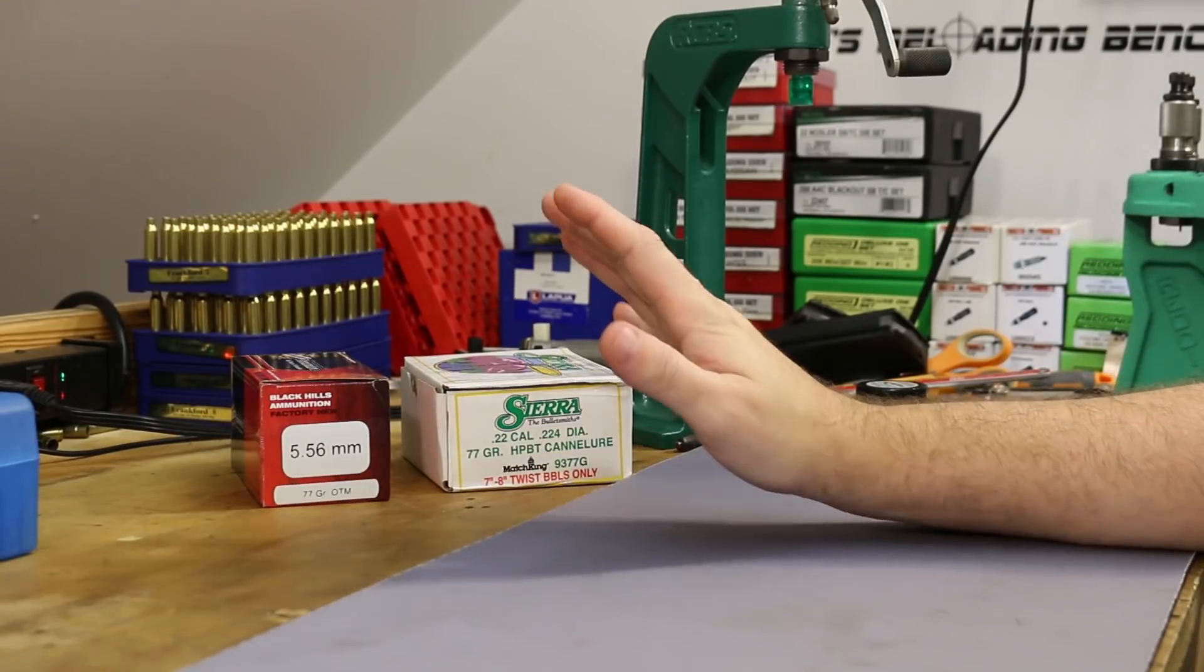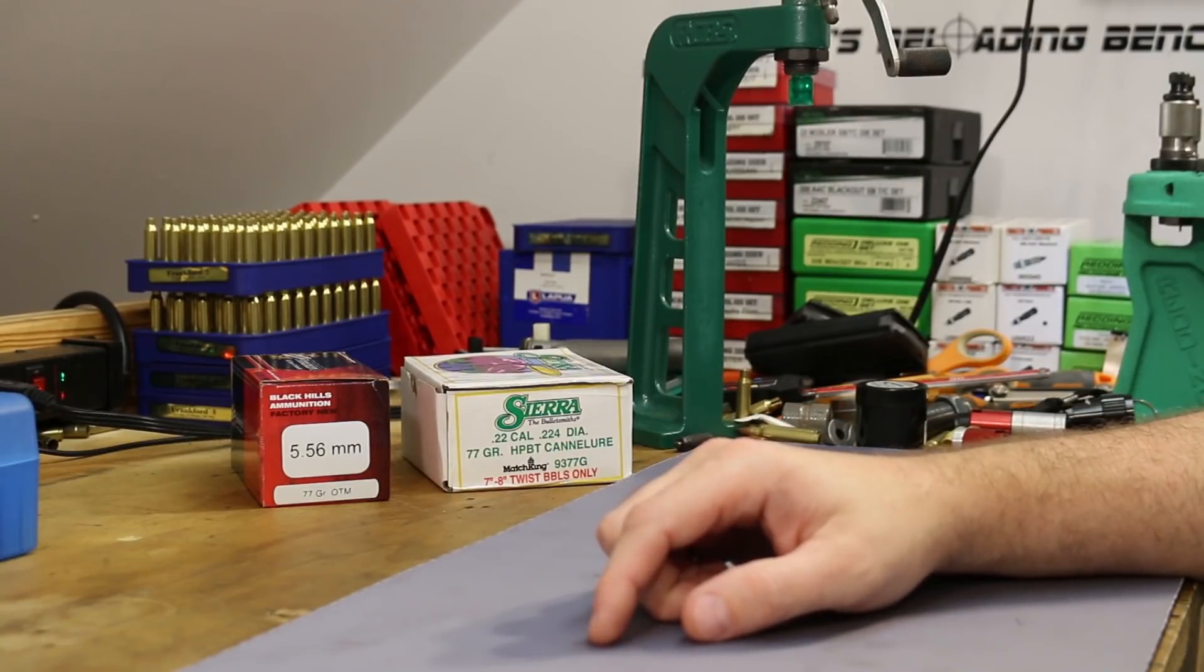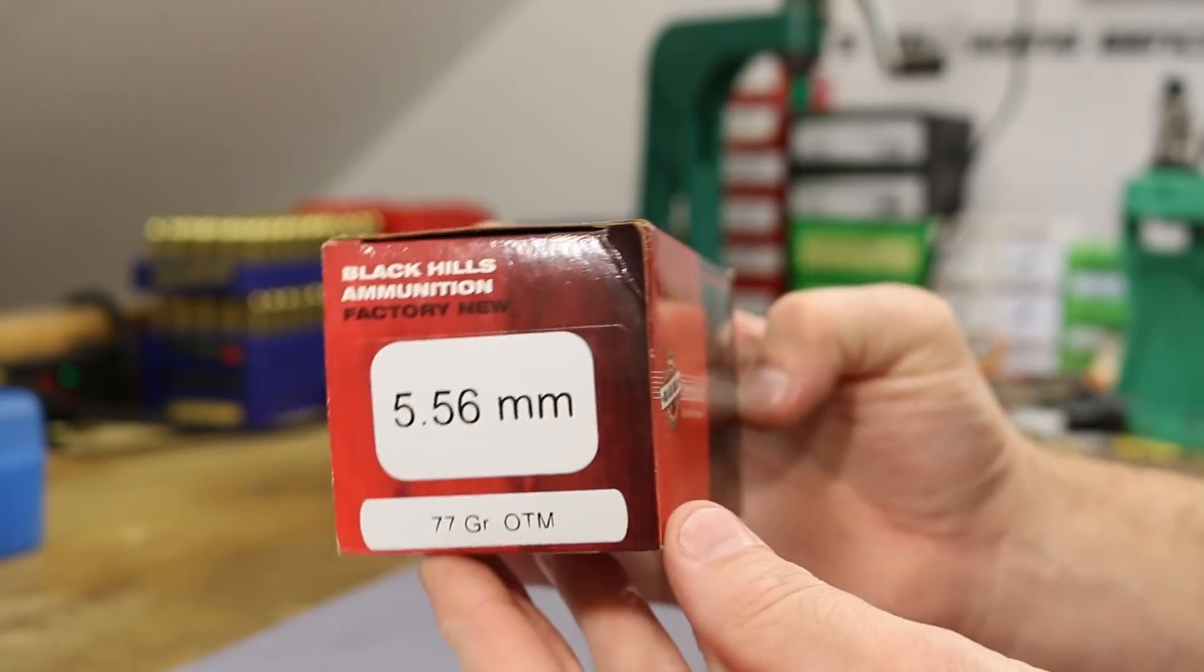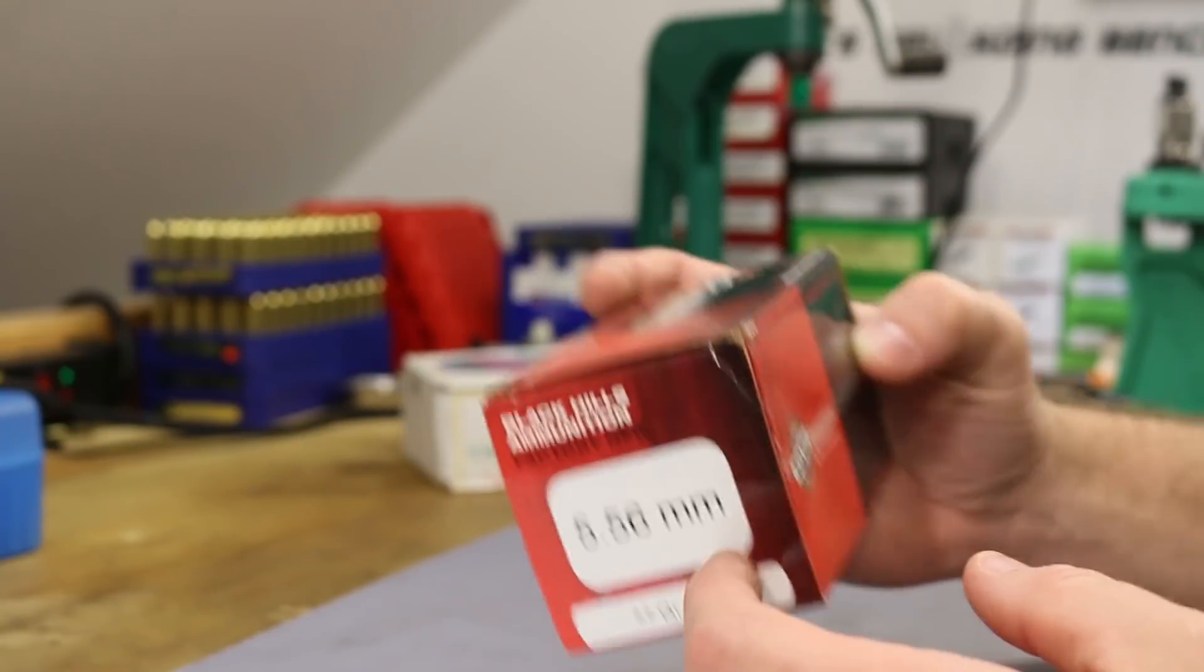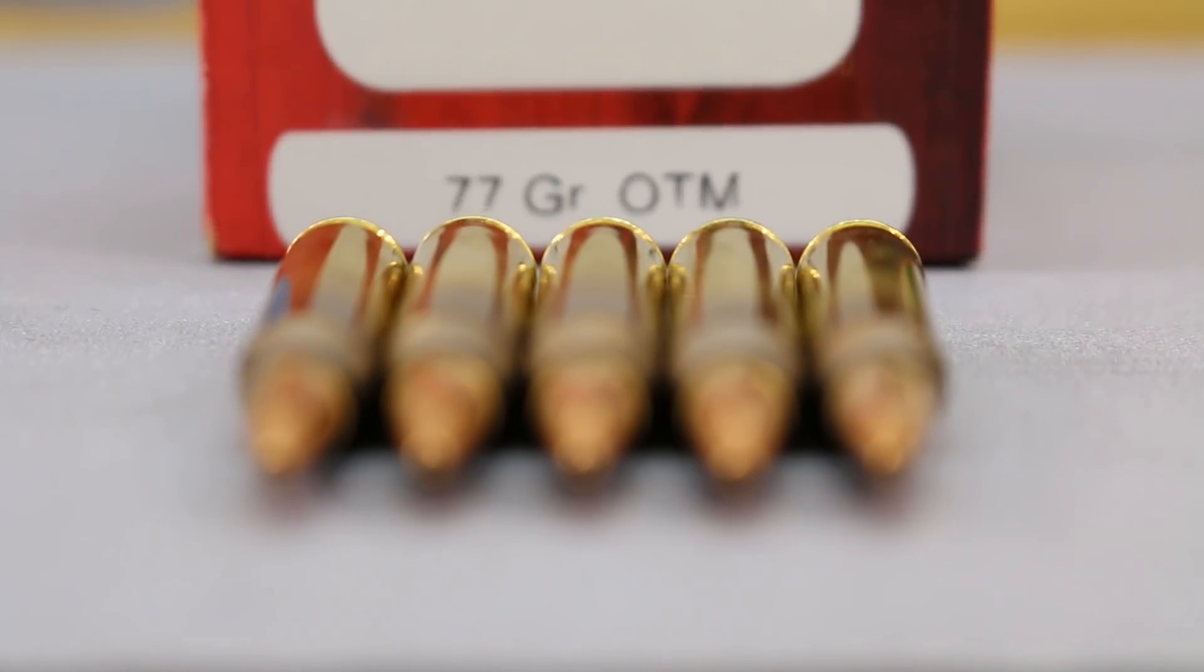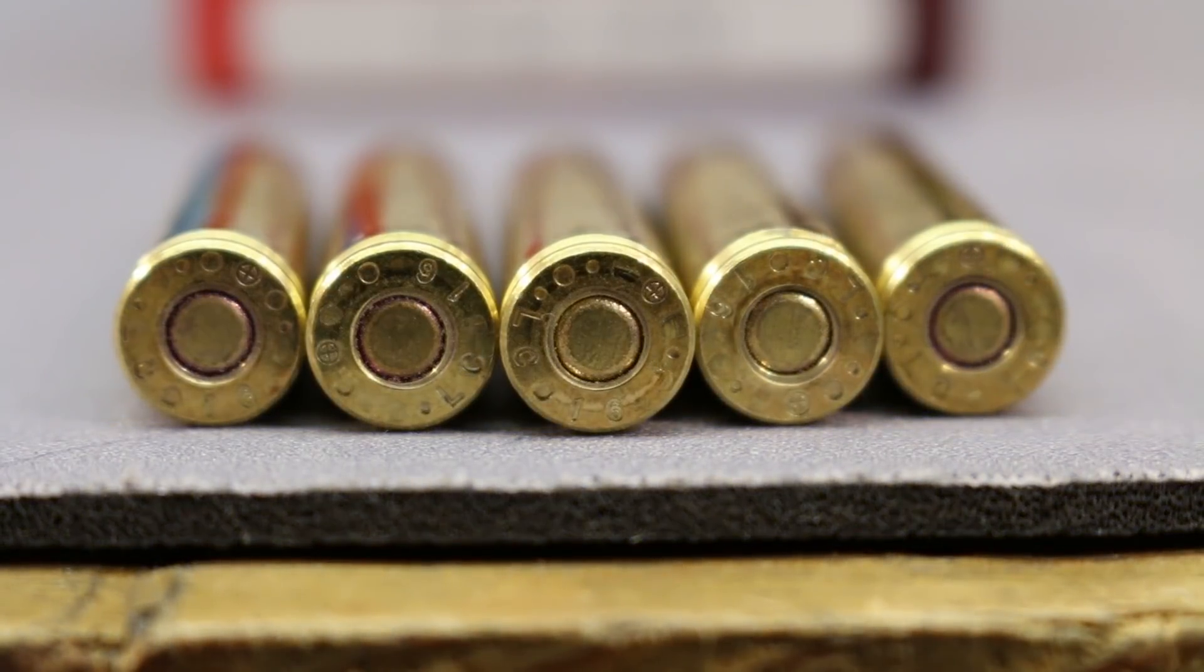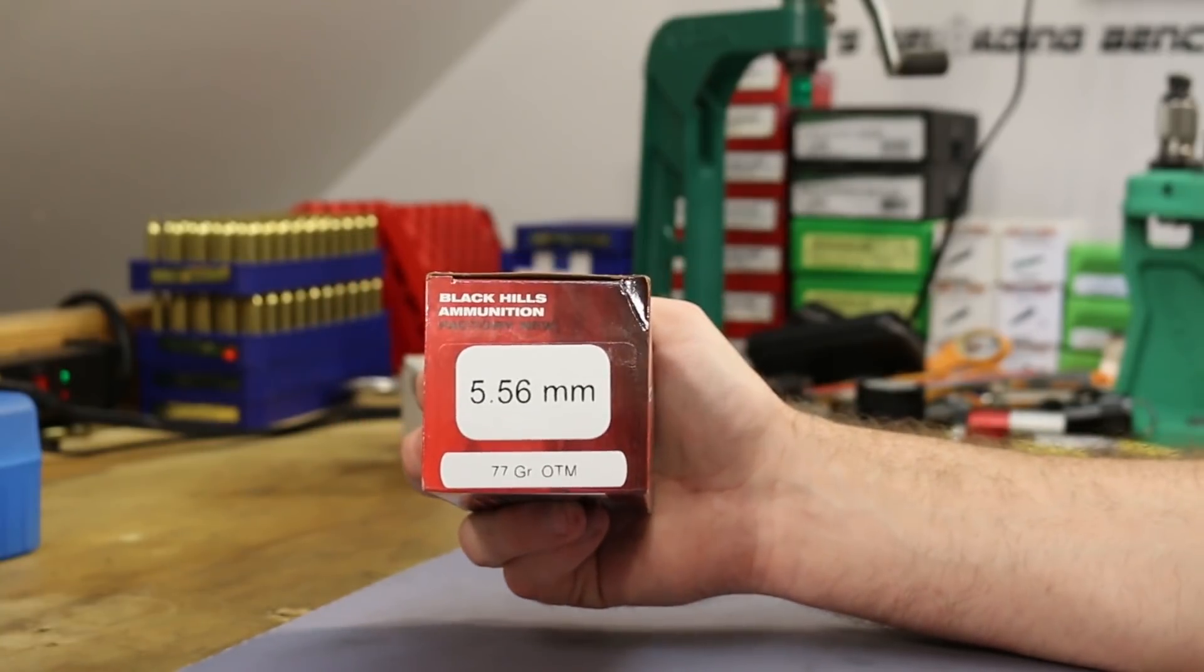Welcome back, my friends. As if we didn't have enough projects started around this place, I want to start another one today. A couple weeks back in the comments, a guy named Jason suggested that I pick up some of this Black Hills ammunition 77 grain open tip match. This is the stuff the military uses - Black Hills manufactures this for them as the Mark 262 mod 1. The plan for this series is to get into the physical characteristics, tear some rounds apart, figure out how to clone this, and get out to the range to shoot some initial test groups.